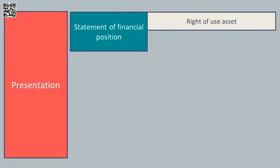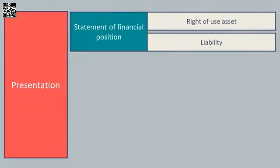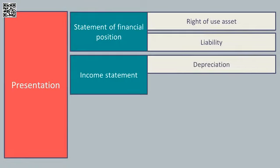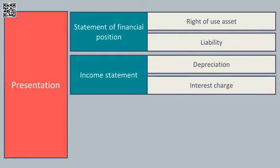Let's take a look at presentation — the requirements are the same for all companies. On the statement of financial position there will be a right of use asset and there will be a liability. In the income statement there will be depreciation and there will be an interest charge as well. The standard does say that you need to have a right of use asset and a liability, but you don't necessarily have to show these as separate line items in the financial statements.